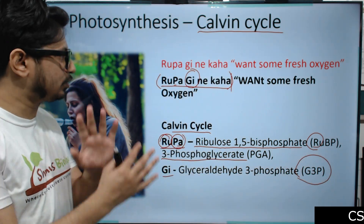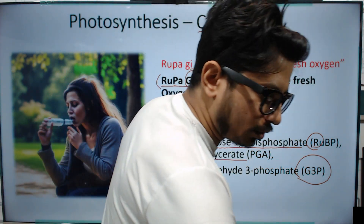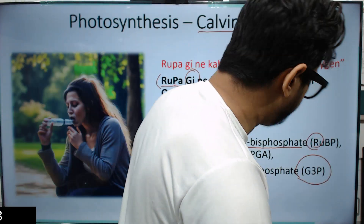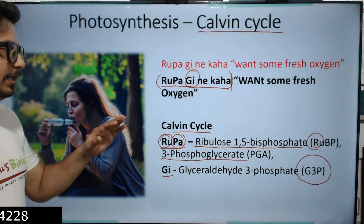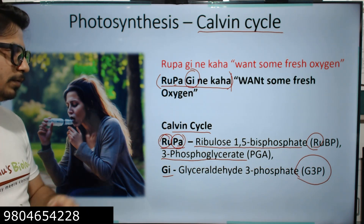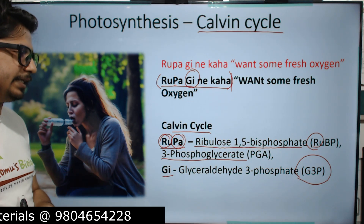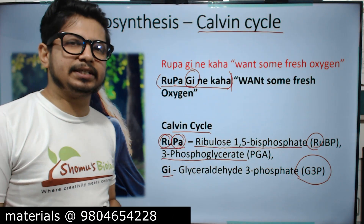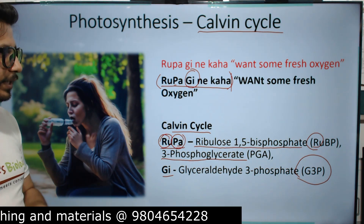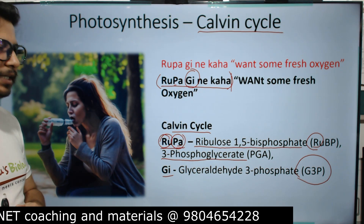So 'Rupa ji' gives us the three key intermediates of the Calvin cycle: Ribulose 1,5-bisphosphate (RuBP), 3-phosphoglycerate (PGA), and glyceraldehyde 3-phosphate (G3P). The enzymes involved convert these intermediates from one to the other. These are the three intermediates of the Calvin cycle to focus on.